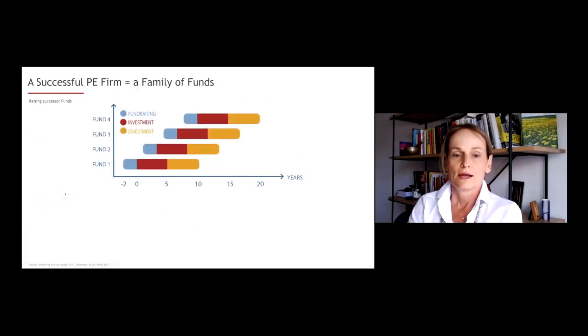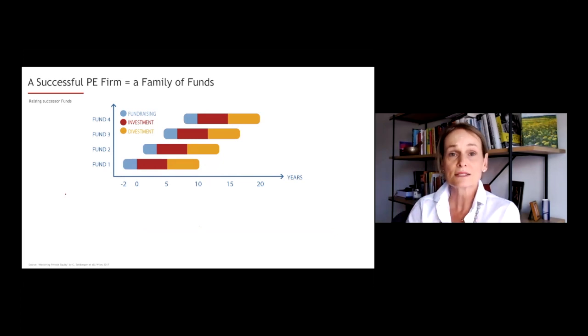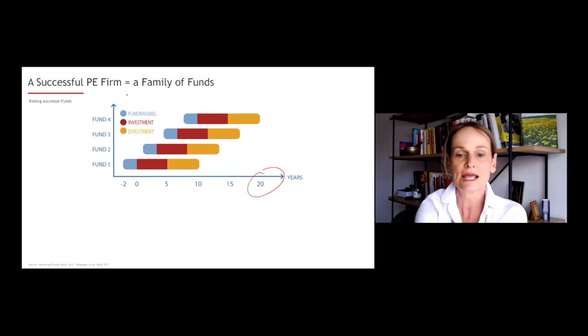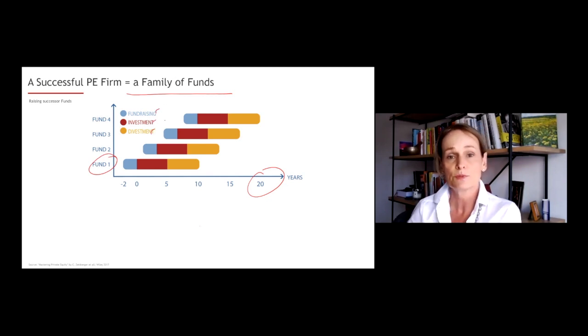Now, this was one fund, but what makes a successful private equity firm? A successful private equity firm will, after let's say 20 years, be able to look back at a family of funds. So they will have raised fund number one with their fundraising investment and divestment periods or exit period, if you like. In year three to four of fund one, usually we will see them raise fund two. In year three to four of fund two, we will see them raise fund three and so on.